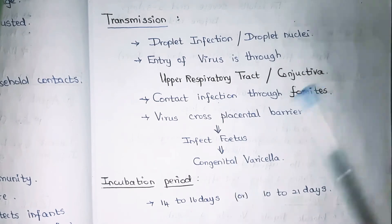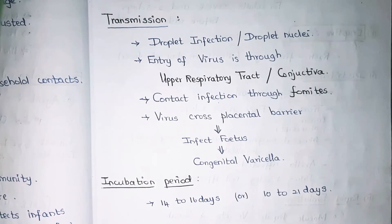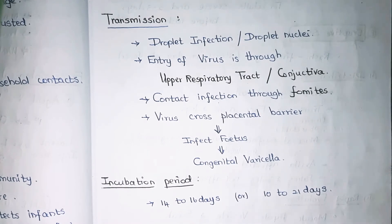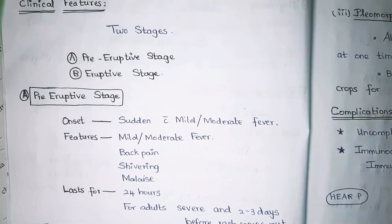The virus can cross the placental barrier and infect the fetus, leading to congenital varicella. The incubation period varies from 14 to 16 days, or more broadly 10 to 21 days.